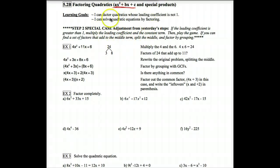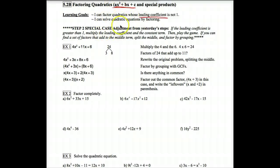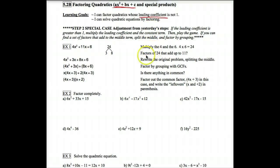So learning goals are to be able to factor quadratics whose leading coefficient is not 1. Leading coefficient means the coefficient of the highest degree term. So in this case, a is our leading coefficient because x squared is the highest power of the variable that we see. And then we also need to be able to solve quadratic equations by factoring, because factoring's purpose is so that we can solve certain quadratic equations quickly.